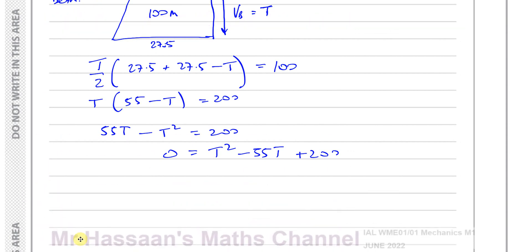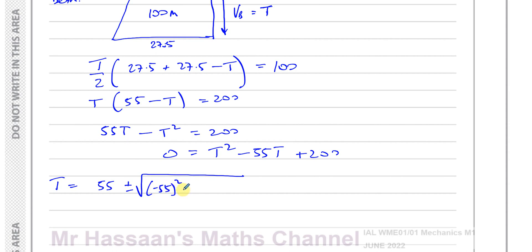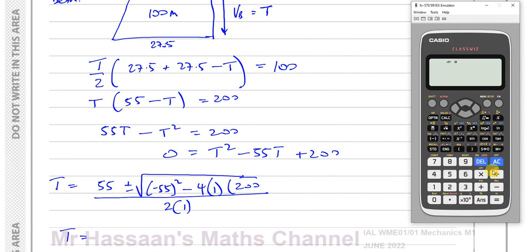This quadratic doesn't factorise easily since no pair of factors of 200 adds to −55. So we apply the quadratic formula: T = (55 ± √(55² − 4×1×200)) / (2×1), where a = 1, b = −55, c = 200.